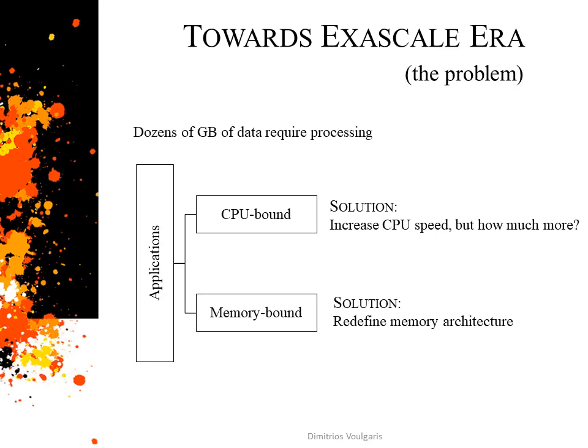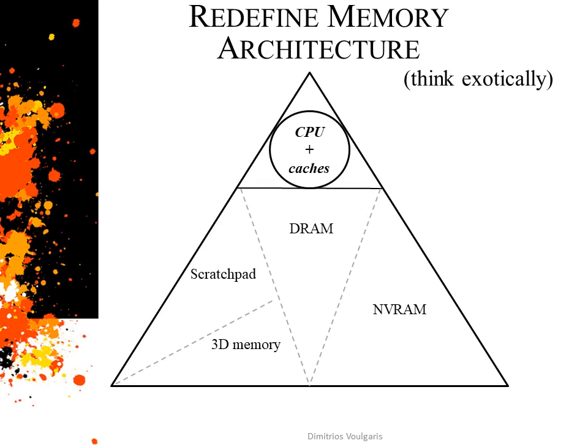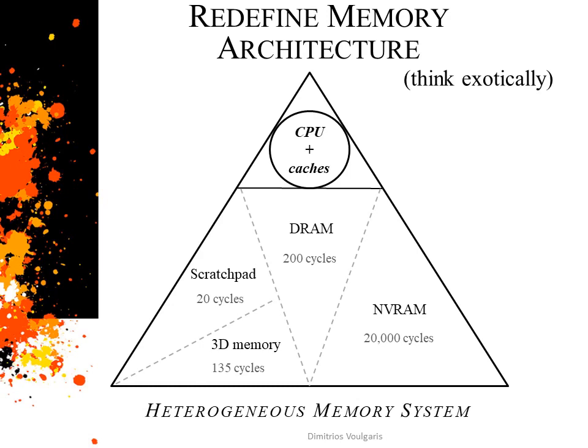That is why we have to redefine the traditional memory architecture and make it more efficient. There are plenty of exotic memory subsystems with completely or just partially diverse hardware architecture and varied access times, yet they are mainly software-controlled and placed in an equal manner at the same level as RAM. That means that we, as programmers, can be responsible for deciding which data is going to be placed in which system.